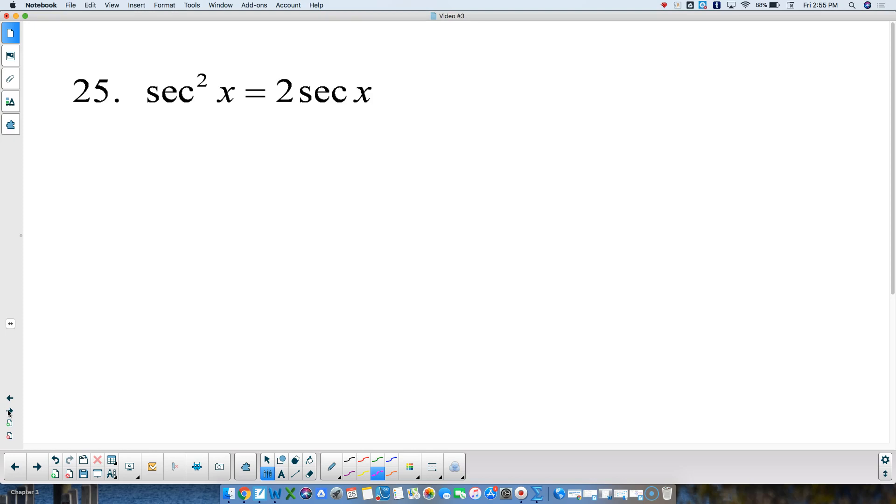On this one, again, two different kinds of trig functions, a squared and a non-squared. So we need to first get everything onto one side, subtracting off 2 secants of x.